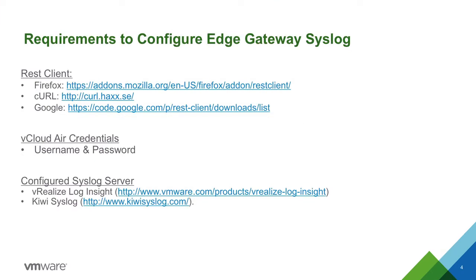To configure a syslog IP for a vCloud Air Edge gateway, you will need a REST client to issue the API commands to vCloud Air. There are a few other clients you can use, including curl and Google Chrome. I chose Firefox as I'm more familiar with this client. You will also need vCloud Air credentials to log into the service, and finally a configured syslog server — I used vRealize Log Insight in this demonstration.